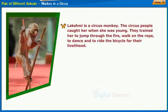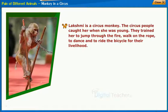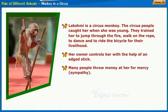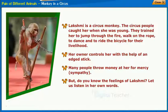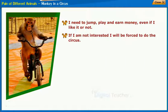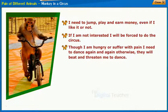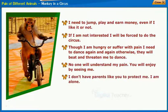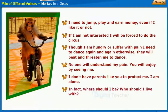Lakshmi is a circus monkey. The circus people caught her when she was young and trained her to jump through fire, walk on a rope, dance and ride a bicycle. Her owner controls her with an edged stick. In her own words: 'I need to jump, play and earn money even if I don't like it. If I am not interested, I will be forced to do the circus. Though I am hungry or suffer with pain, I need to dance again and again. Otherwise, they will beat and threaten me. No one will understand my pain. I don't have parents like you to protect me. I am alone.'